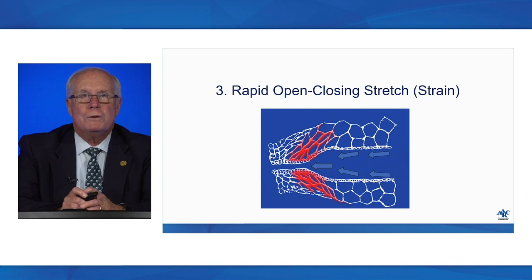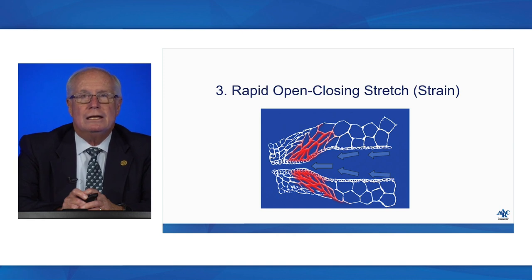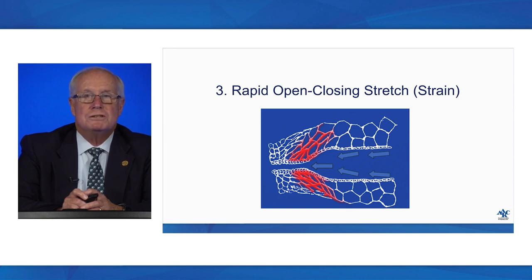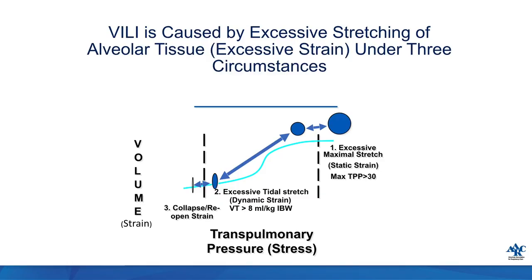The final mechanism is rapid reopening, or opening-and-closing strain. A cartoon depicts collapsed alveoli on the left and inflated alveoli on the right. Right at the interface during breath delivery, incredible stretching occurs — some have estimated these stretching pressures to be as high as 100 cmH2O or more — happening with every breath where there is popping open and collapse of alveoli. Collapse and reopening occurs when there is repetitive opening and collapsing of alveoli — one of the three major mechanisms of lung stress and strain injury.